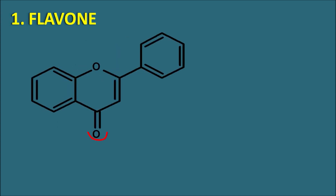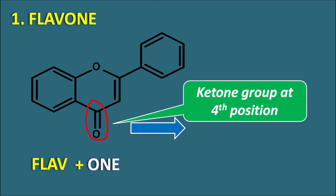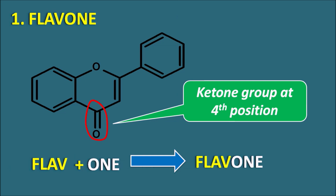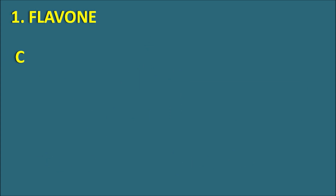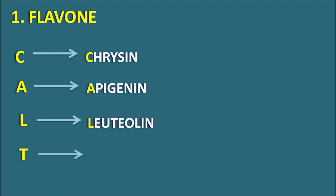The first type is flavones. Flavones have a ketone group at the fourth position, hence the suffix 'one'. The basic ring system has the prefix 'flav' and with the 'one' suffix it becomes flavone. We have four important flavones which can be remembered by the code C-A-L-T: C for chrysin, A for apigenin, L for luteolin, and T for tricetin.